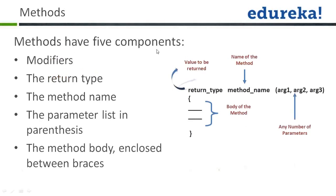Methods have five components. The first is modifiers — like public, private, protected, and default. If you don't write any modifier, it takes the default. The second is return type. A method can return an integer, string, character, float, or nothing. If you are not returning anything, you mention void in place of the return type, meaning the method will not return anything.